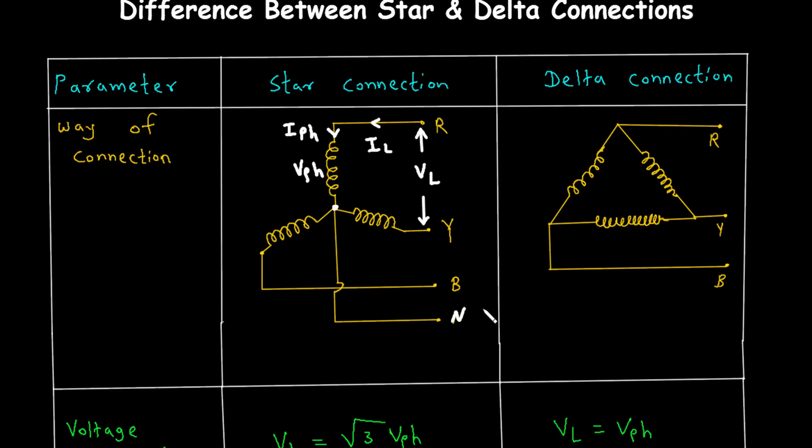Now, let's move on to the delta connection. In this configuration, the windings are connected end-to-end in a loop. Each junction point of the windings is connected to the power supply lines. There is no neutral point in a delta connection, as the windings form a closed triangle.